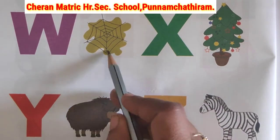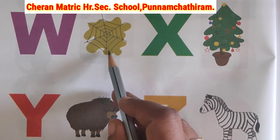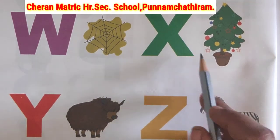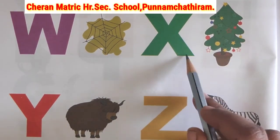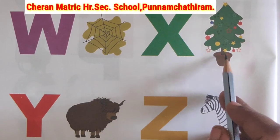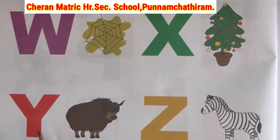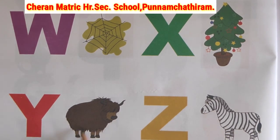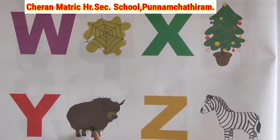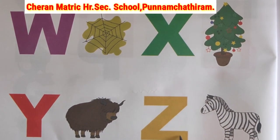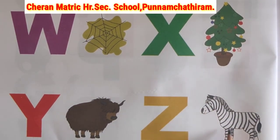V after W. W, web. W after X. X, mystery. X after Y. Y, yawk. Y after Z. Z, zebra.